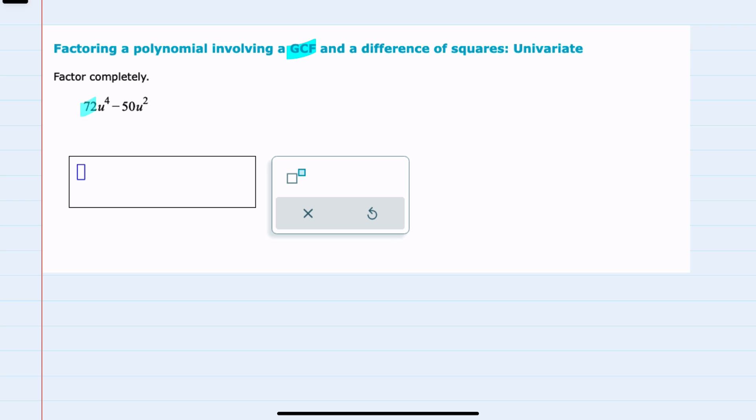Looking at the numerical portion of each one of these, 72 and 50 both have a common two that I can factor out, and when I look at the variables I have u to the fourth and u squared, so they both have at least two u's, so I can take out a u squared.